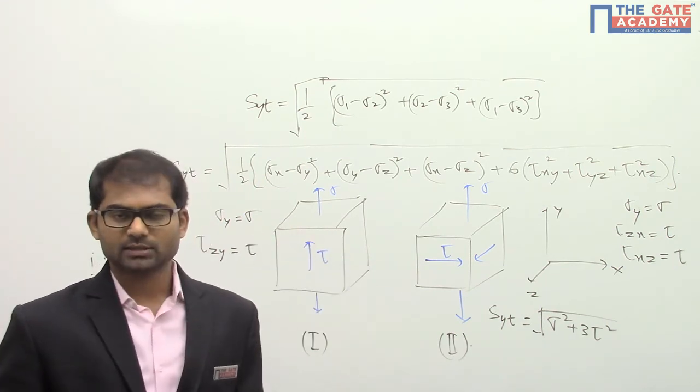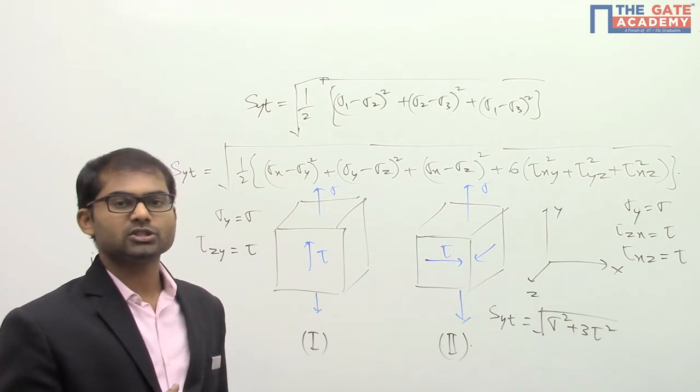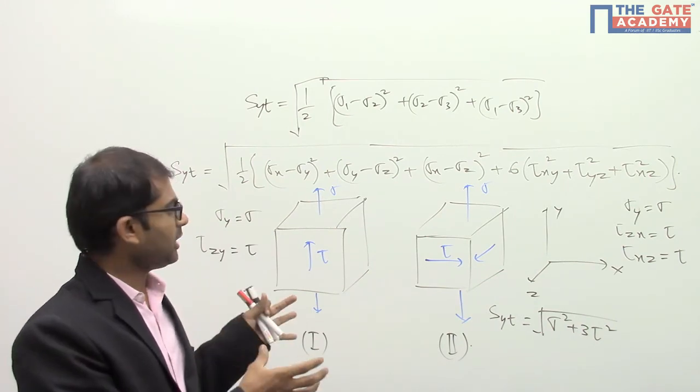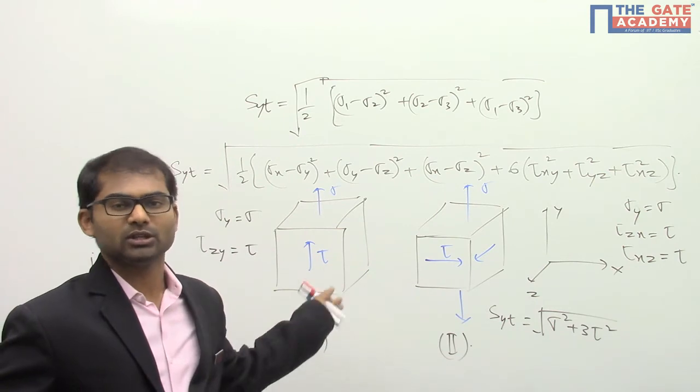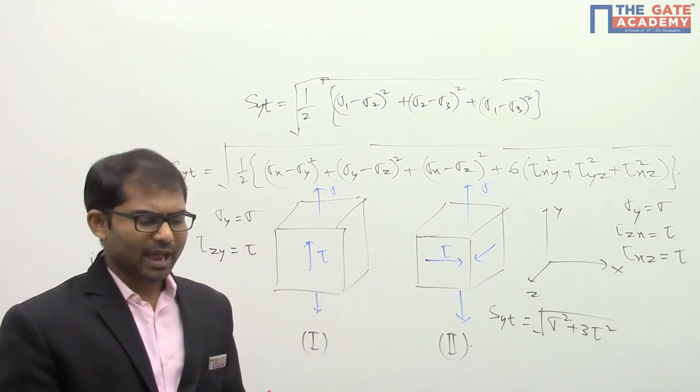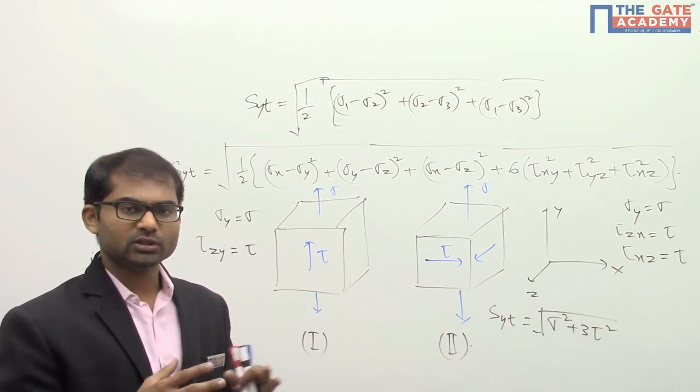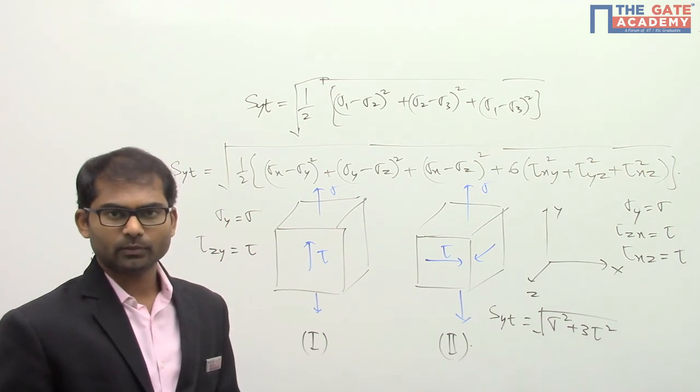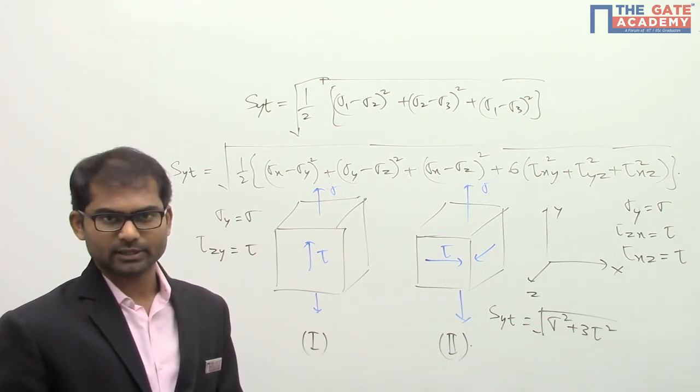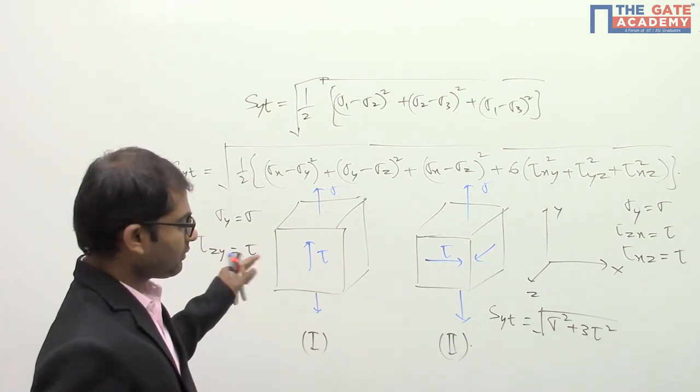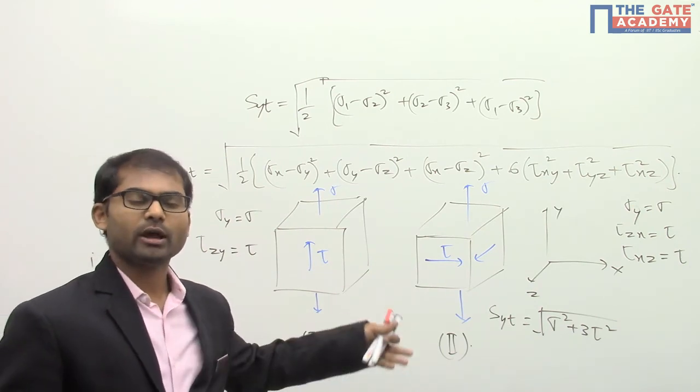As you are getting the right-hand side to be the same for both the loading cases, that means distortion energy induced by the applied loads on both the members is the same. So as distortion energy is the same, both have equal probability of failure, so both will yield simultaneously. If any one of them is having higher, that would have been the answer to this question.